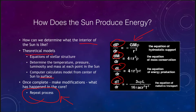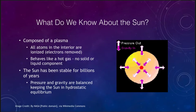Let's look in a little more detail about what we know about the Sun. We know that it is composed of a plasma, which means that all of the atoms are completely ionized. When you get inside, all of the atoms have had their electrons removed, and in fact when you get down to the core, every atom is completely ionized — there would be no electrons bound to atoms. So essentially the entire Sun behaves like a very hot gas.